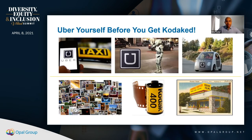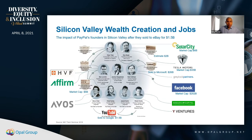Uber yourself before you get Kodaked. In 1888 George Eastman and Henry Strong started Kodak. By 1976 Kodak had 85 percent of the camera business and 90 percent of the film business — they were a monopoly. In 1975 one of their engineers actually invented the digital camera, but the board and executives were making so much money on cameras and film that they ignored it. They ended up going bankrupt in 2005 — a century of success, a decade of decline, then bankruptcy. We want to make sure we're being innovative.